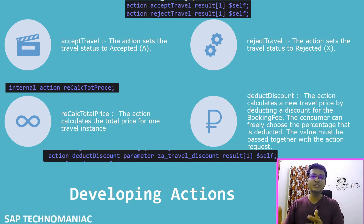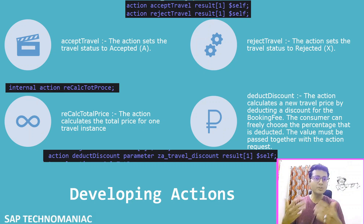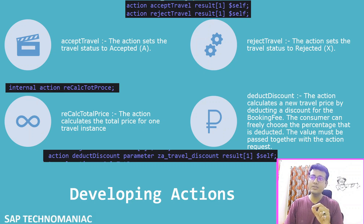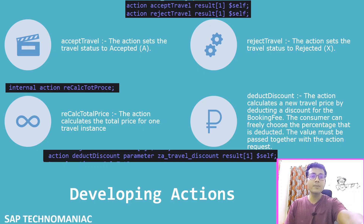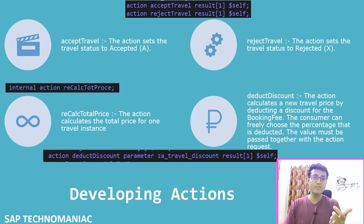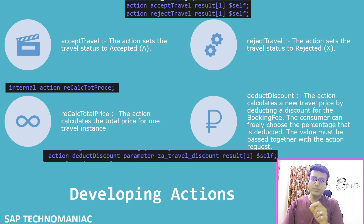I will not explain in detail but will quickly write or copy-paste the code since we have done this already in the managed scenario. The most important thing: since we are creating draft applications, you always have to use the %TKY field instead of normal key fields. Apart from those three actions, I will create one additional action — the deduct discount.